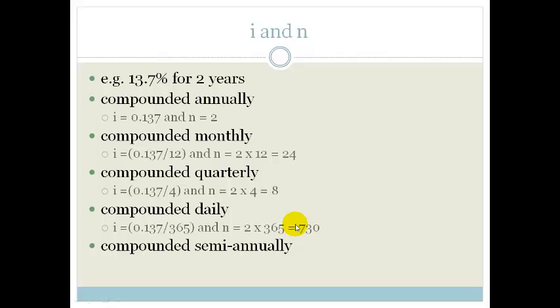Compounded semi-annually means twice a year. So, therefore, your interest is going to be 0.137 divided by 2. And, your N is going to be 2 times twice a year, which is 4.